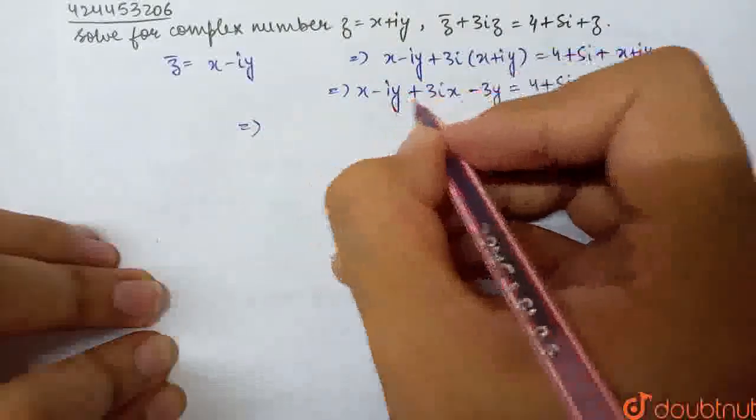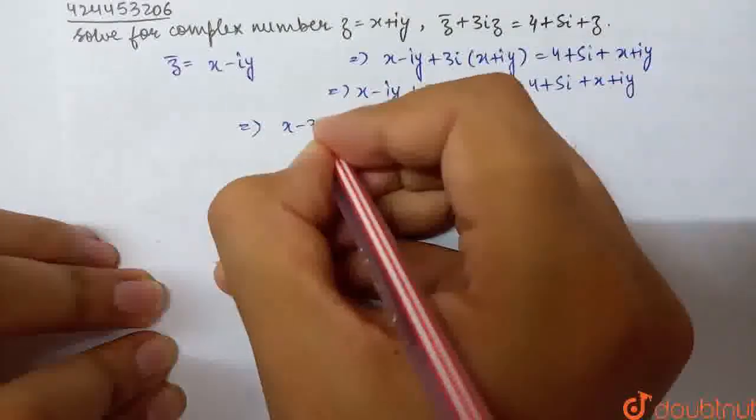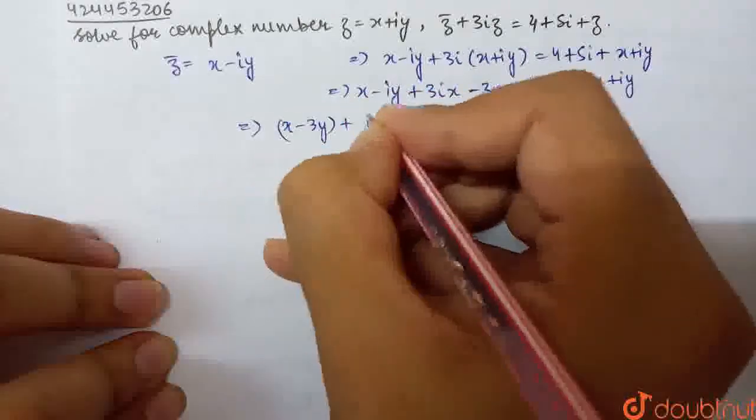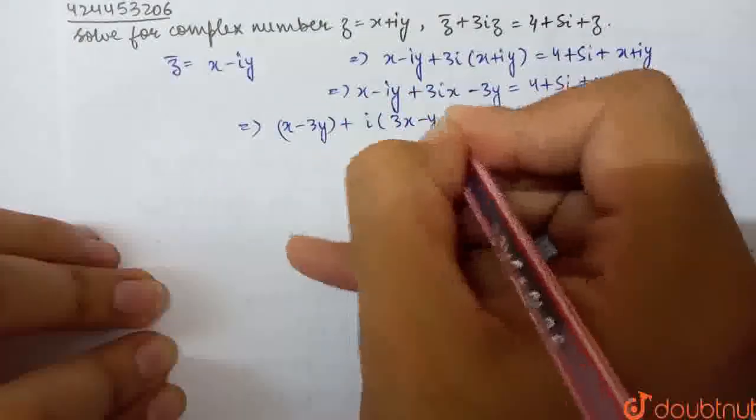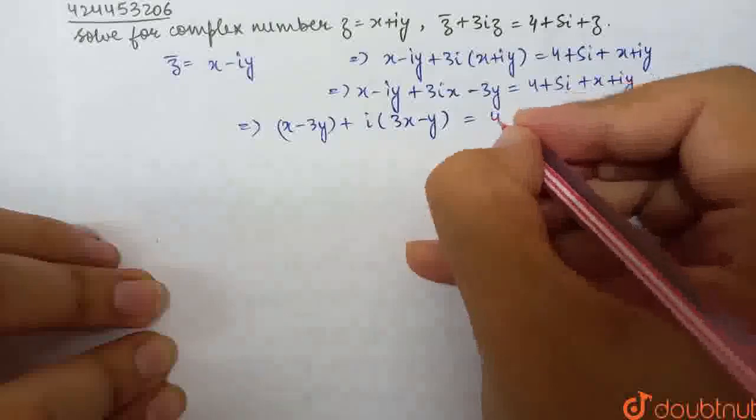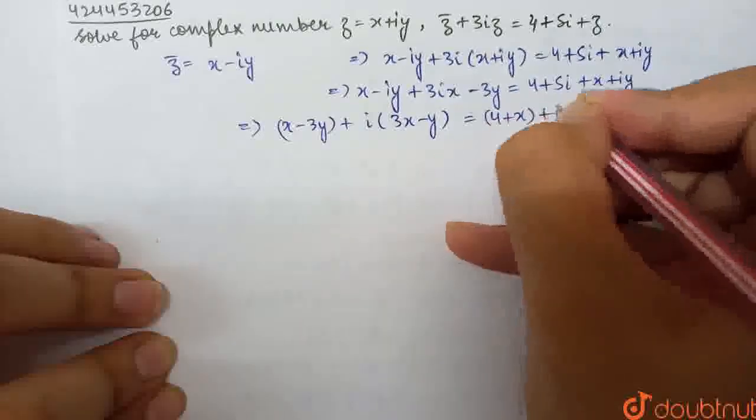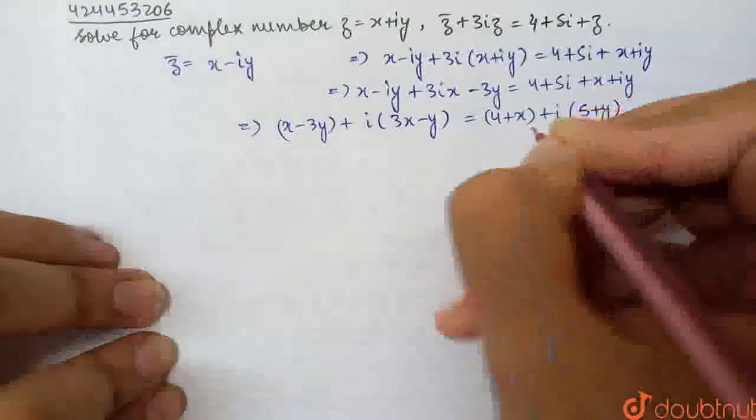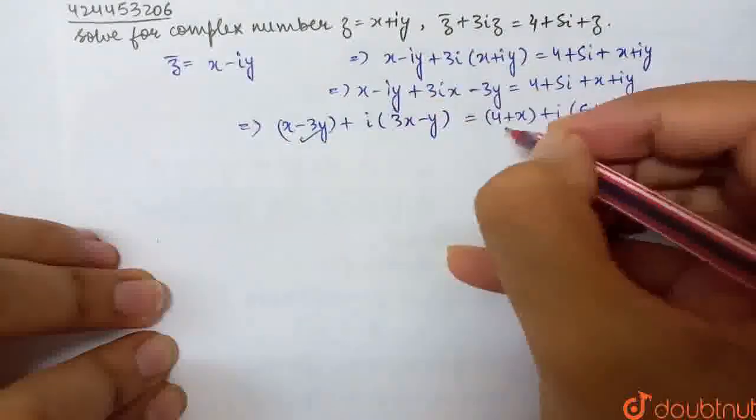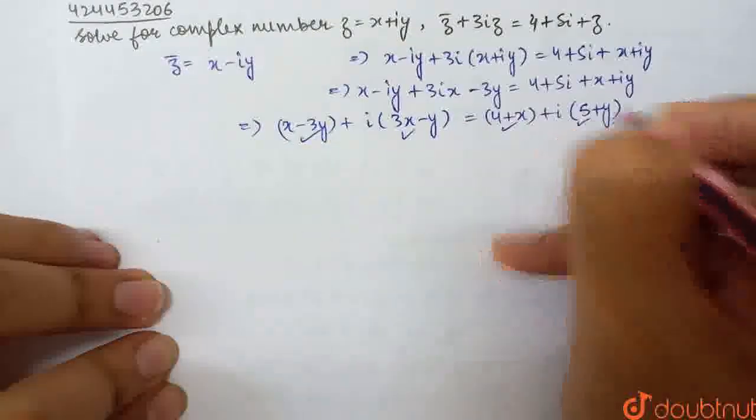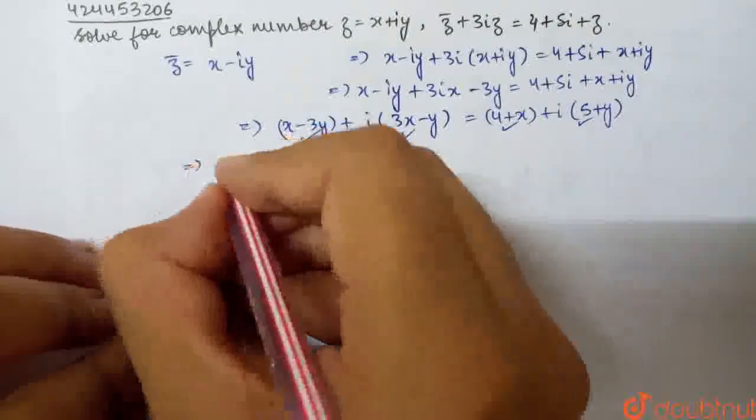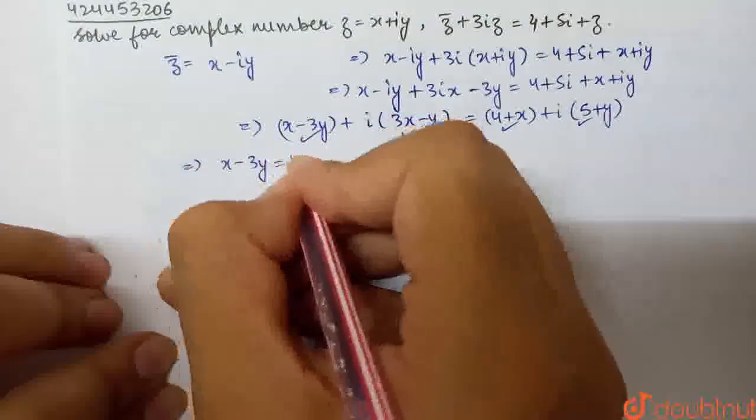So now I will equate from both sides. X minus 3Y plus iota times 3X minus Y equal to 4 plus X plus iota times 5 plus Y. Now two complex numbers are equal to one another, real parts equal and imaginary parts equal.